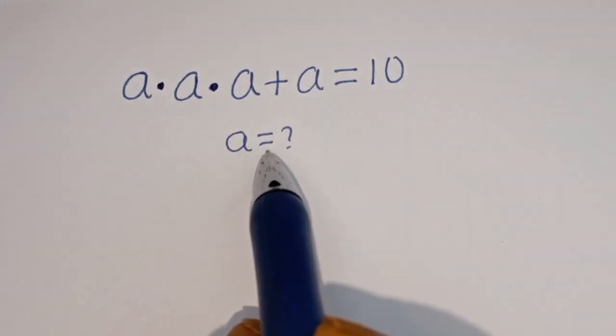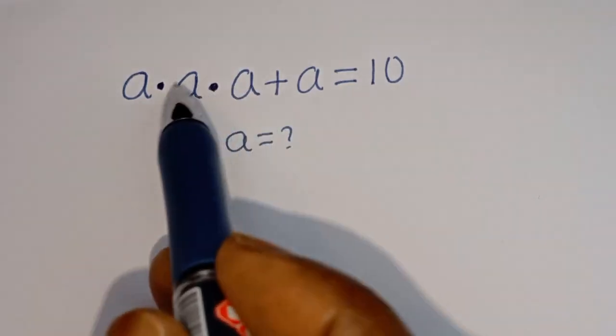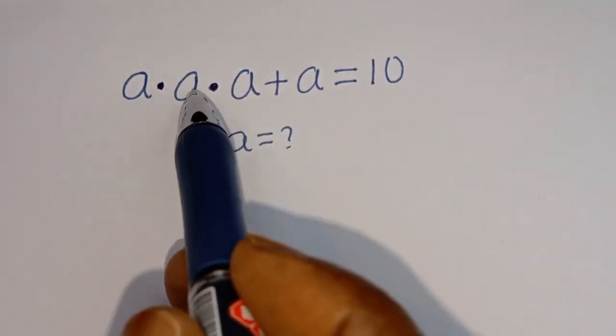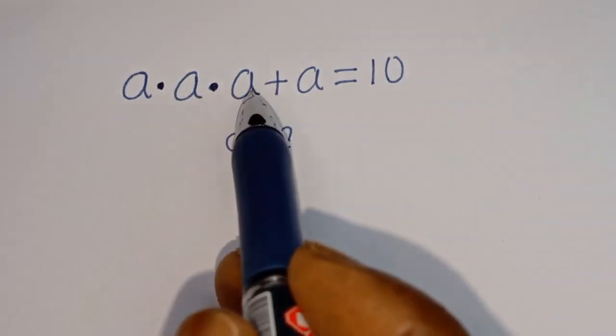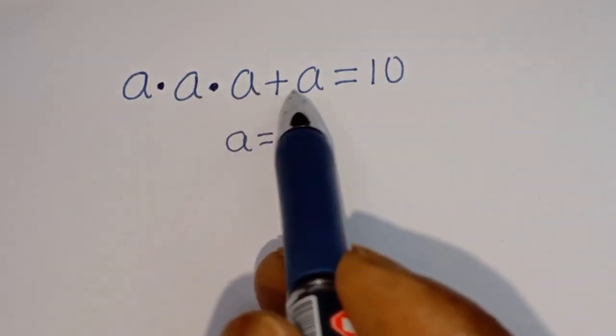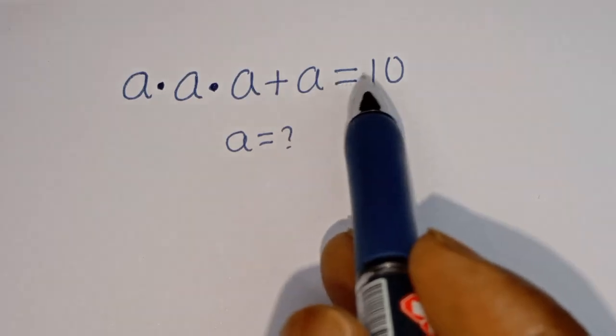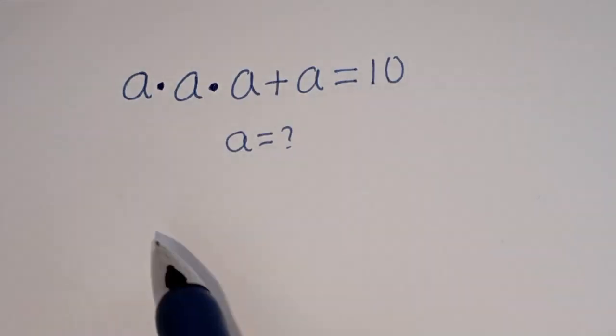Hello, how to solve for A in this equation. A multiplied by A multiplied by A plus A is equal to 10.